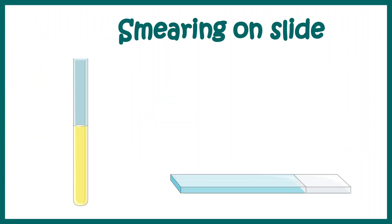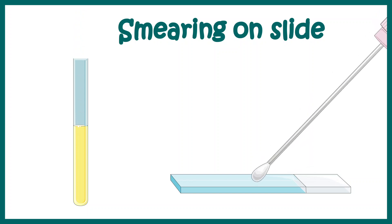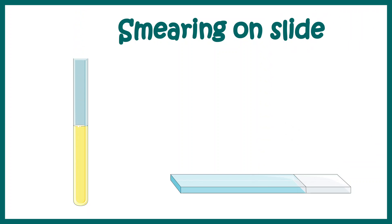The first step involves smearing the sample on a slide. Here, the patient-derived sample would be smeared on a slide, and we are expecting that this particular sample might have Mycobacterium tuberculosis. At the end of this video, we would understand whether it does or not.